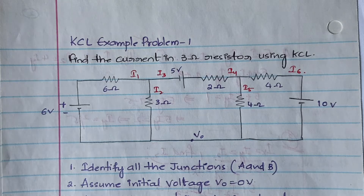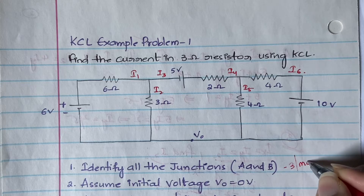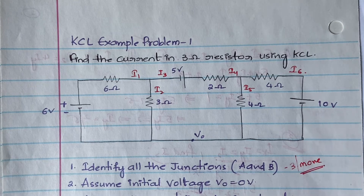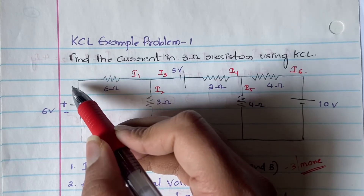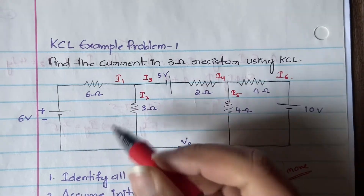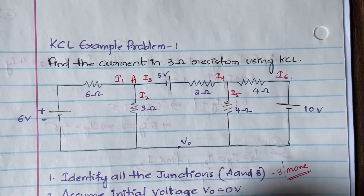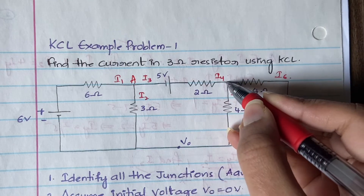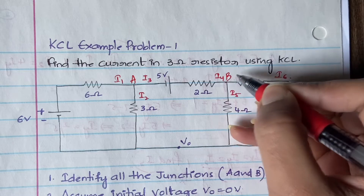First, identify all the junctions. A junction is a place where three or more branches connect. Here only two branches are connecting, so this is not a junction. But here three branches are connecting — one, two, three — so let us identify this as Junction A. And here also three branches are connecting — one, two, three — so let us identify this as Junction B.